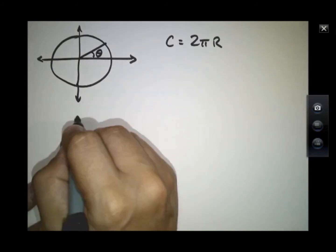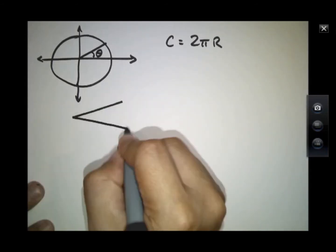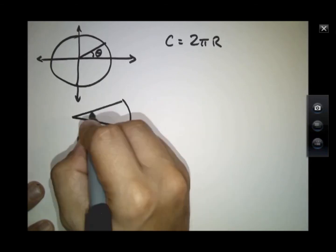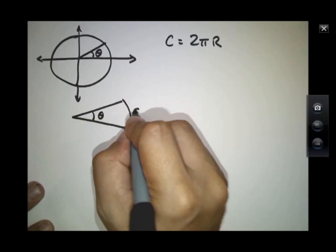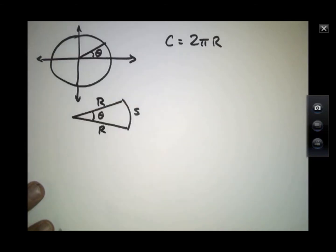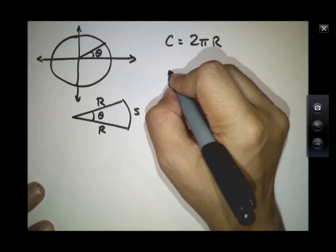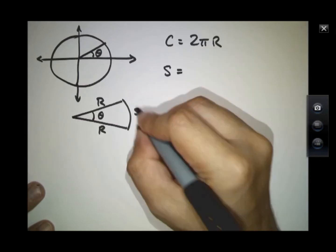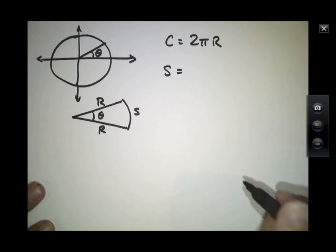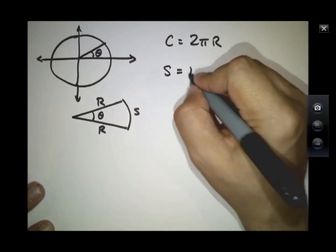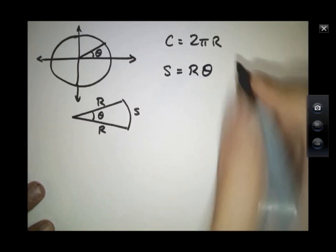I'd like to define a more general relationship, that if I had some other angle theta that's not 360 degrees, instead I had something like a wedge, I'd like to be able to write down some sort of linear relationship between the length of this outside of the wedge and the radius r.